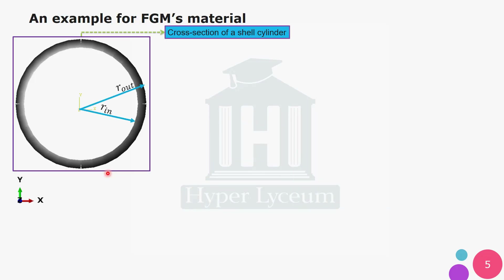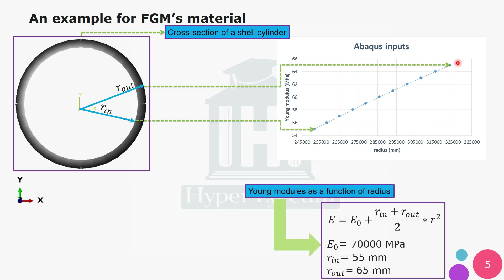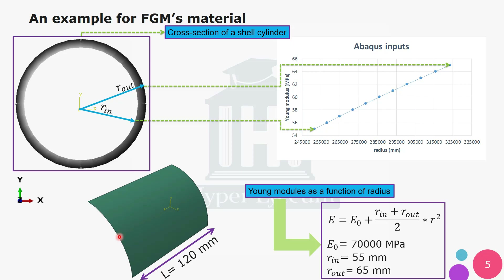Here you can see the cross section of the cylinder made by shell elements. The blue chart shows the mechanical properties of FGM as defined in Abacus software. As you can see, the Young's modulus change starts from the inner radius and ends at the outer radius. The Young's modulus formula is a function of radius. The cylinder length used in this simulation is 120 millimeters, and the geometry of shell elements is shown without thickness — the thickness is defined in the property module for material.